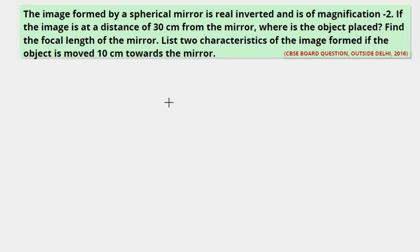The image formed by a spherical mirror is real, inverted and is of magnification minus 2. If the image is at a distance of 30 cm from the mirror, where is the object placed? Find the focal length of the mirror and list two characteristics of the image formed if the object is moved 10 cm towards the mirror.